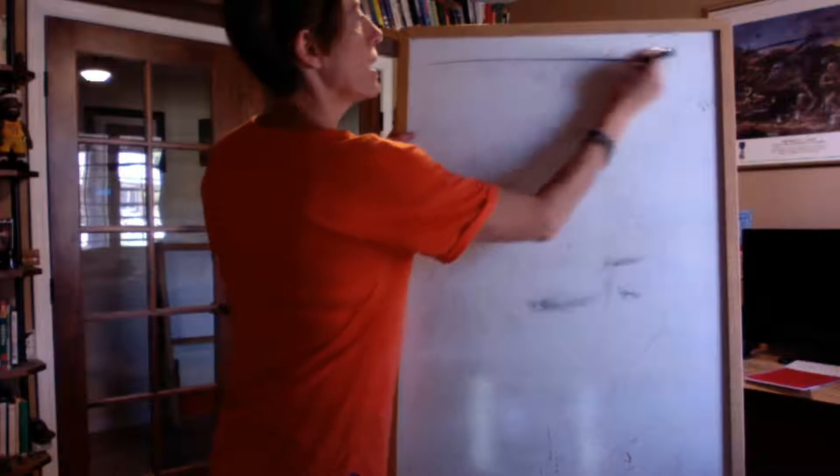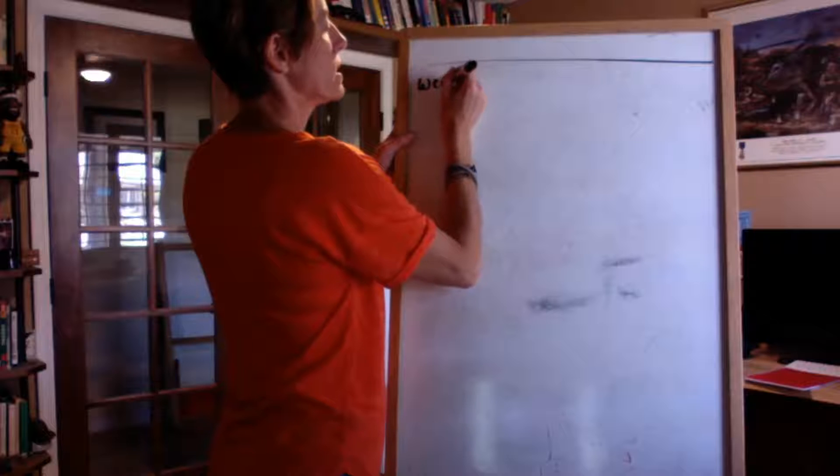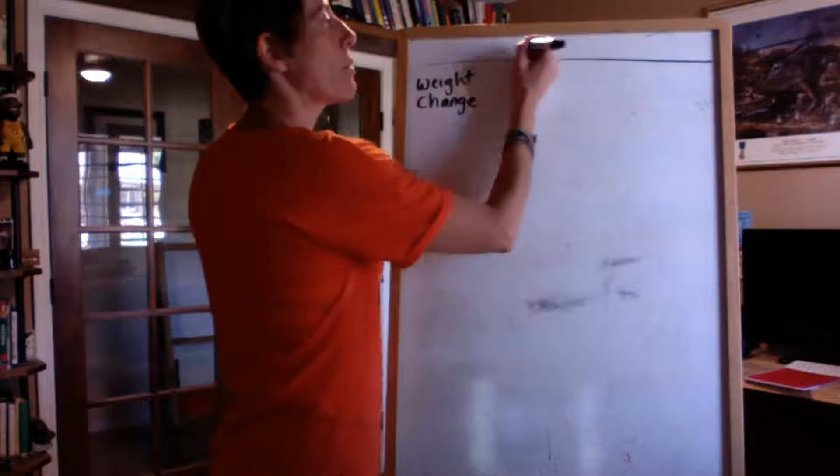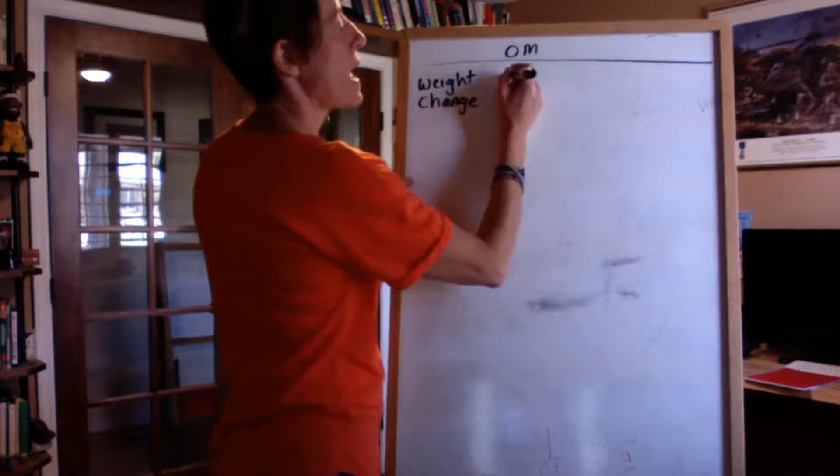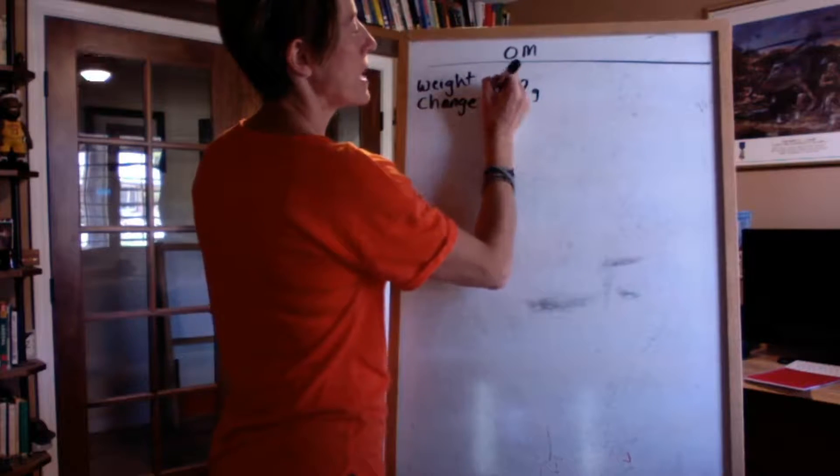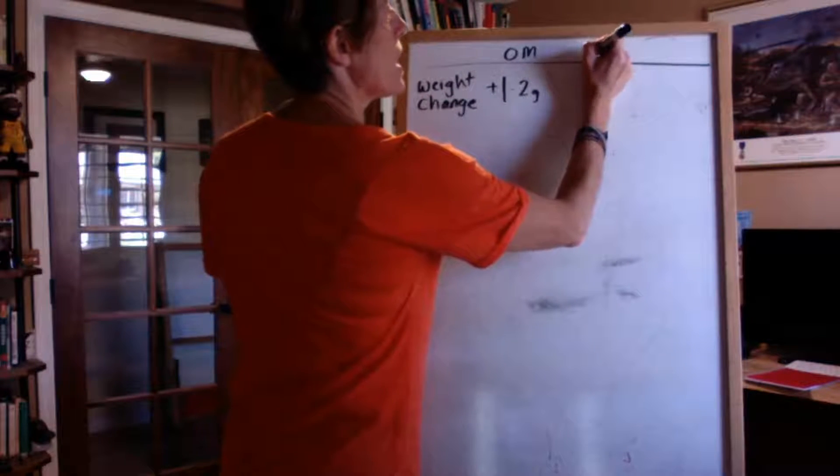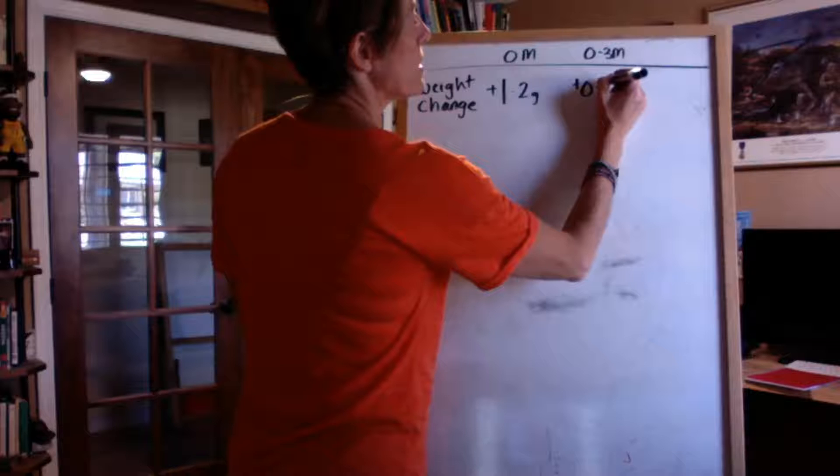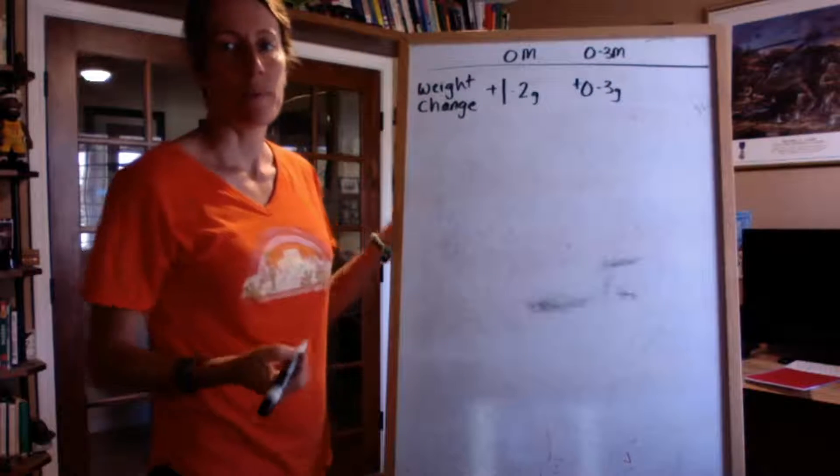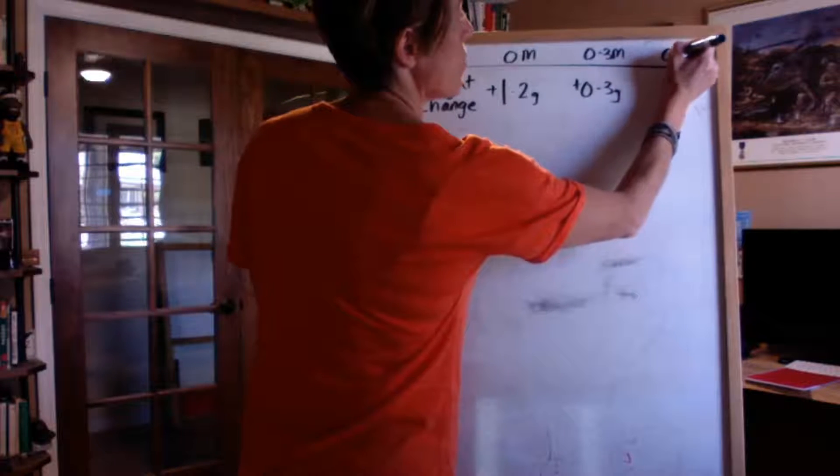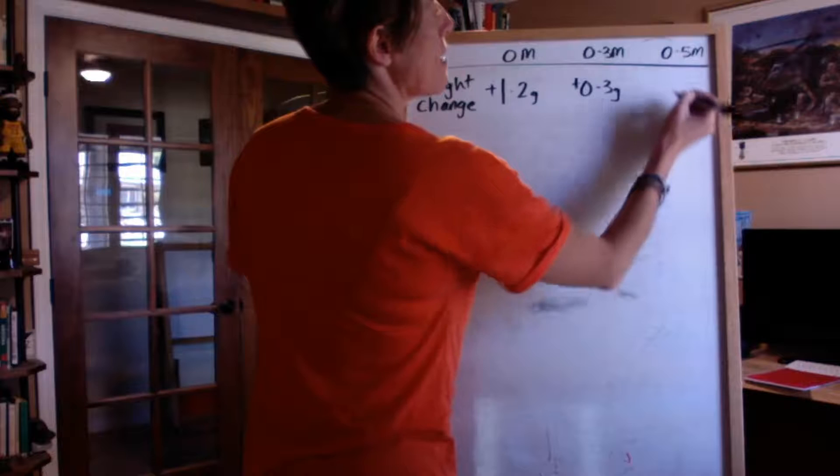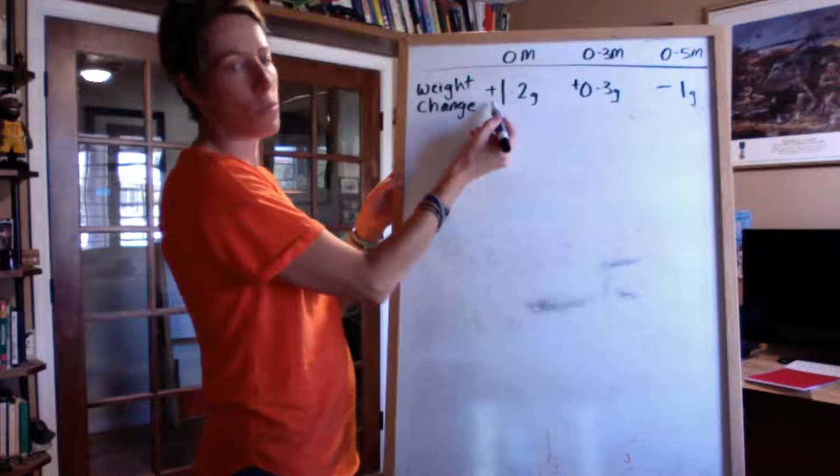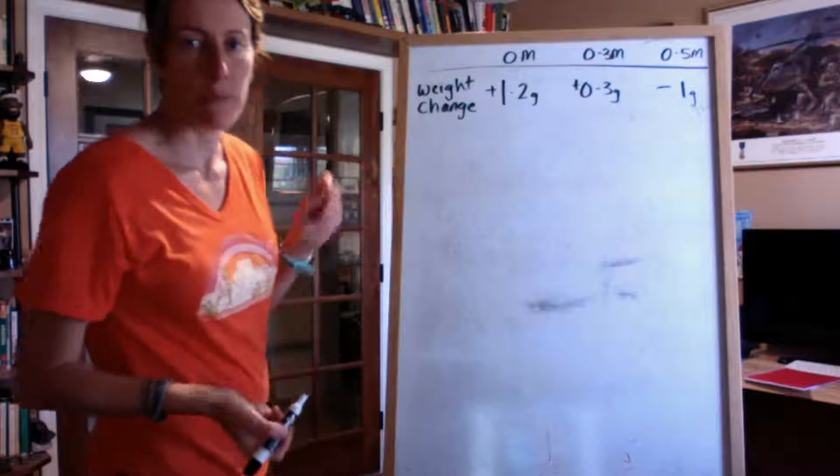So let's say we'll make a little table here. Here's our weight change. Let's say that the potato slices that were in zero moles, the pure water, they gained 1.2 grams. If the potatoes were in 0.3 moles, let's say they gained 0.3 grams. I'm just making this up. And let's say the ones that were in 0.5 moles lost 1 gram. So this one gained, this one gained, this one lost. Okay, so that's our data.